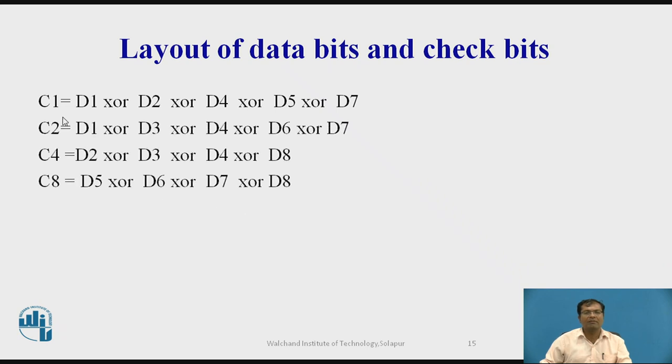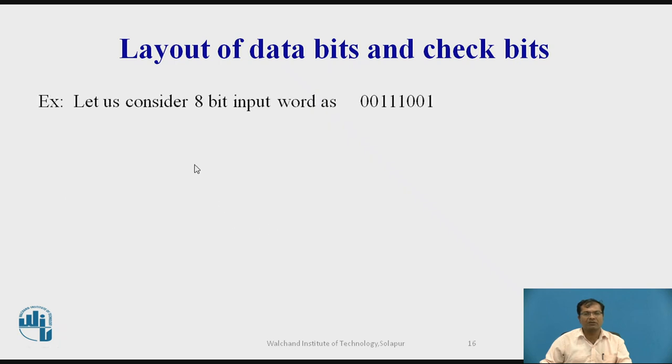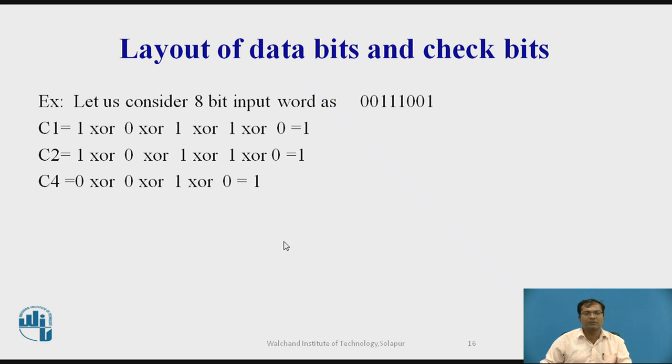So we are already familiar with c1, c2, c4 and c8. According to this formula, we are putting the respective values. Let us consider if 8 bit is like this, then the c1, c2, c4, c8 looks like this. And hence the final value which is 0, 1, 1, 1 for the given bit. Assuming that if there is an error occurs in this position, then what happens? We will see.